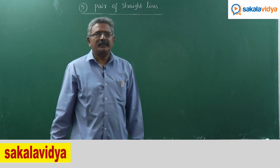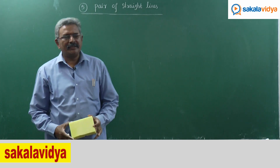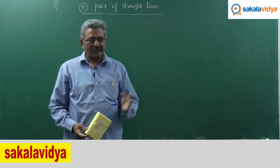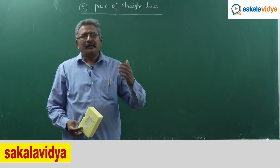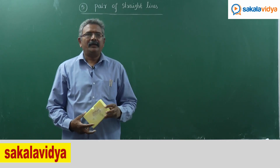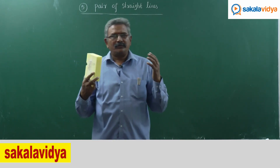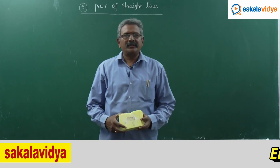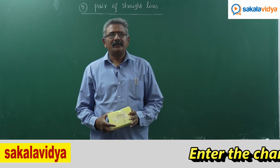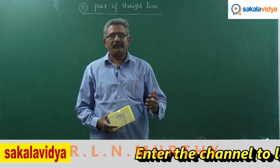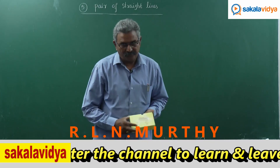Let us discuss the theorems on pair of straight lines which is in the form of ax squared plus 2hxy plus by squared is equal to 0.